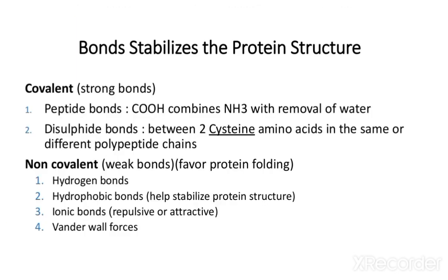Now in the protein structure, the bonding provides stability to the structure. There are two types of bonding in protein structure: covalent bonding and non-covalent bonding. Covalent bonding is stronger than non-covalent. Under covalent bonding, two bonds form: one is the peptide bond (between carboxyl and amine groups, releasing a water molecule) and the other is the disulfide bond, which forms between two cysteine amino acids in the same or different polypeptide chains.